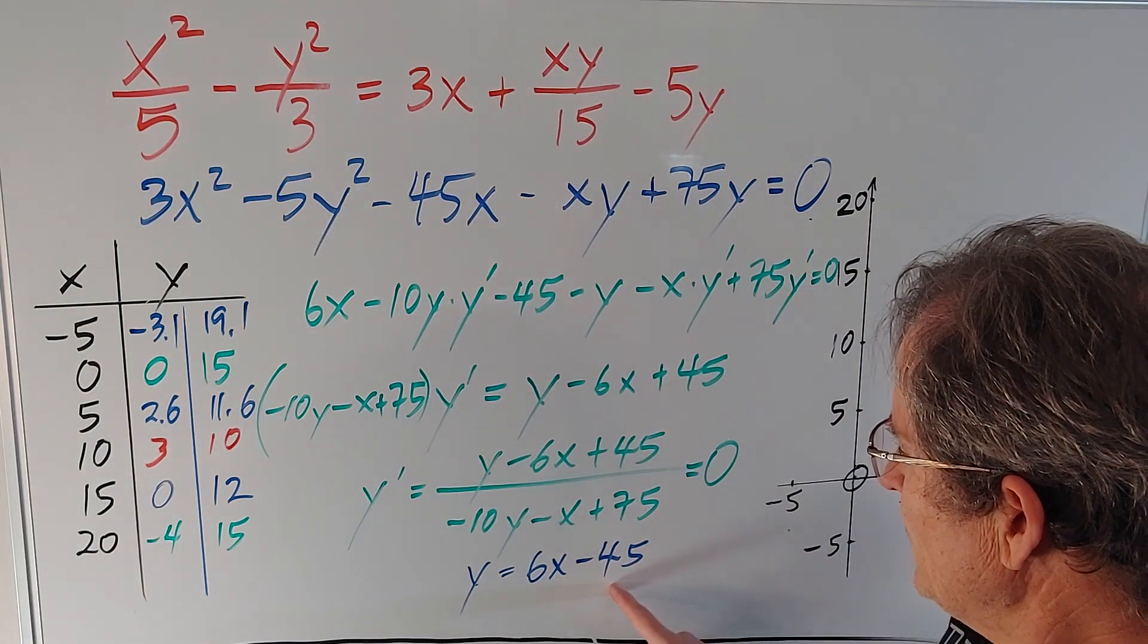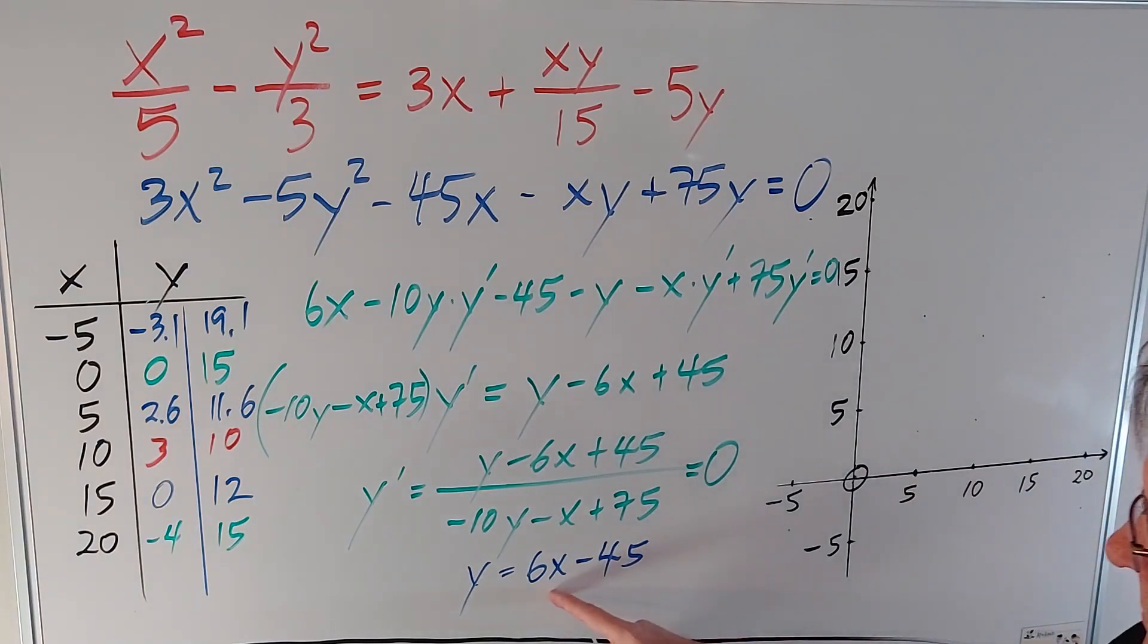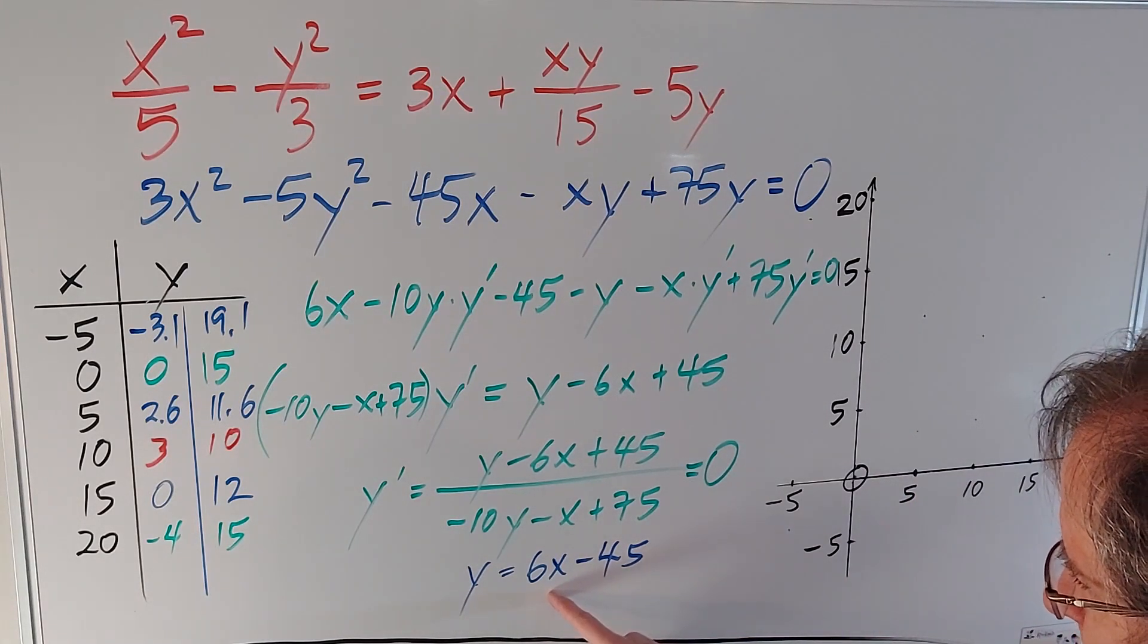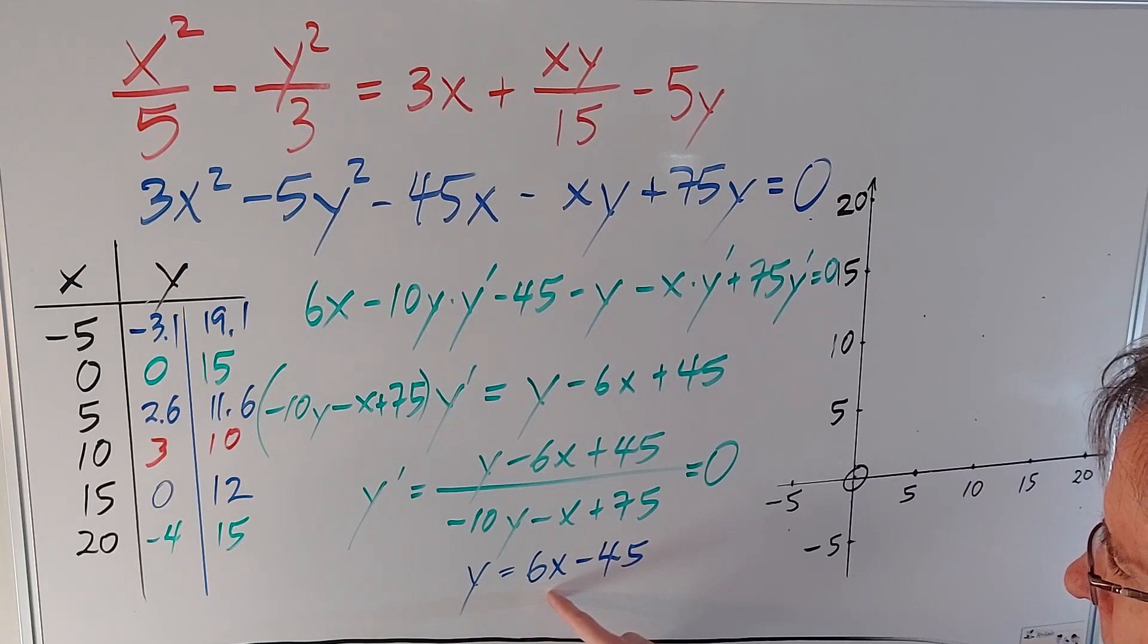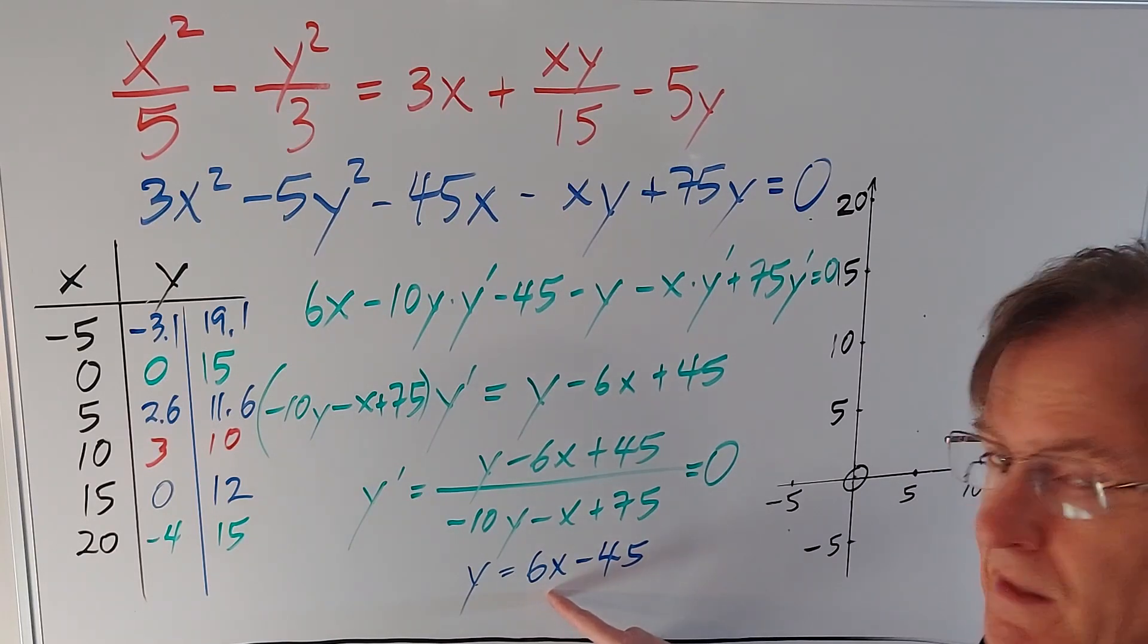Well, it tells us that the maximum and minimum of the hyperbola will be on this line. Y intercept is negative 45, so it's way off my graph. The slope is 6, so it's very steep.